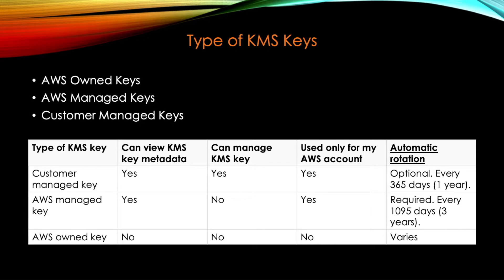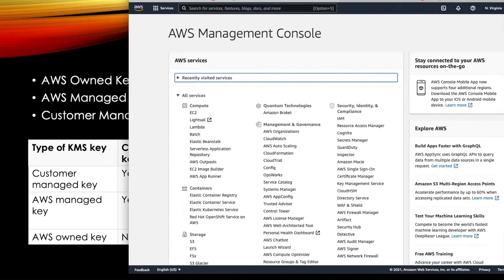Next, let's talk about the types of KMS keys. The first is AWS Owned Keys. As the name suggests, these are owned by AWS. You don't have any visibility into their metadata, you cannot manage them, and you don't even know whether a particular key is used only for your account or for multiple customers' accounts. Key rotation is managed entirely by AWS.